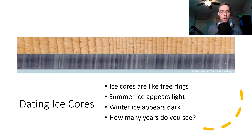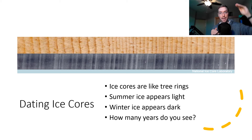So how do you date ice cores? It's kind of like dendrochronology. If we line these up, it's actually astounding how much like dendrochronology it is — because instead of looking horizontally as a tree grows out, you're looking vertically as ice is deposited on top. Ice cores are like tree rings: summer ice appears light, winter ice appears dark. So you can count how many years you see, just like you would the rings of a tree.